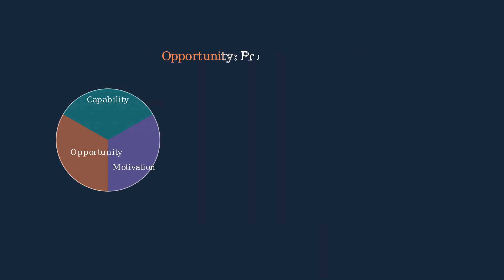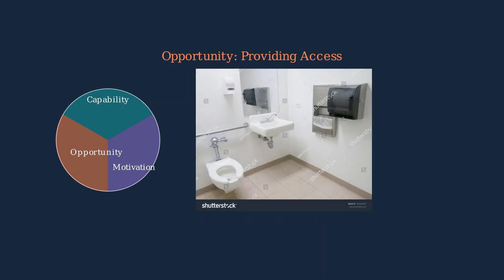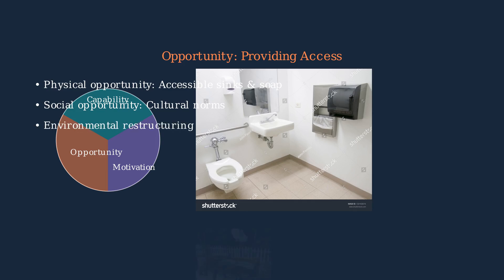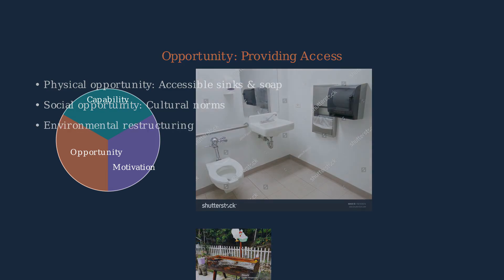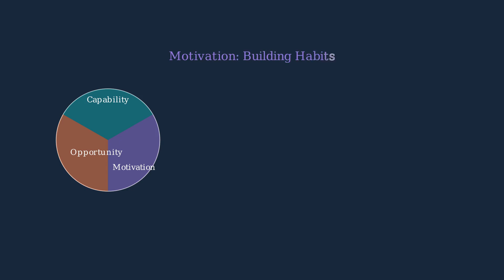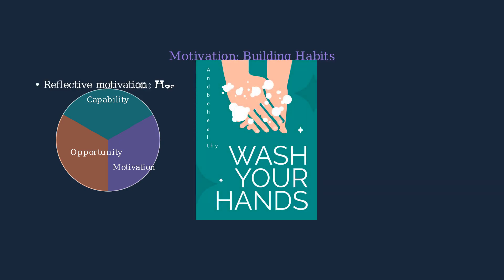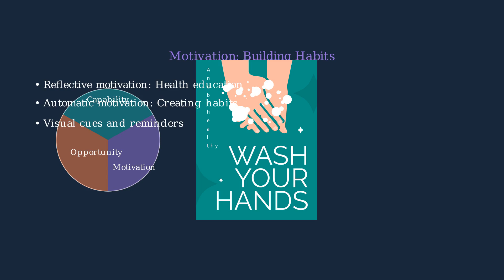Next, we need to create opportunity. This means providing accessible hand washing facilities with soap and water in both indoor and outdoor settings. Finally, we must address motivation. This includes both reflective motivation through education about the importance of hand washing, and automatic motivation by establishing habits through visual cues like posters.